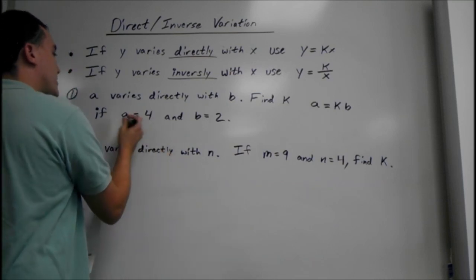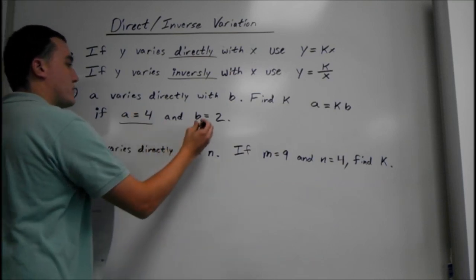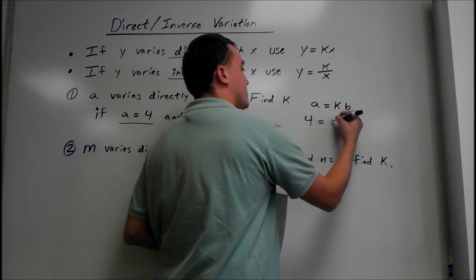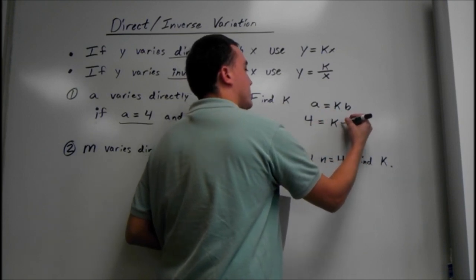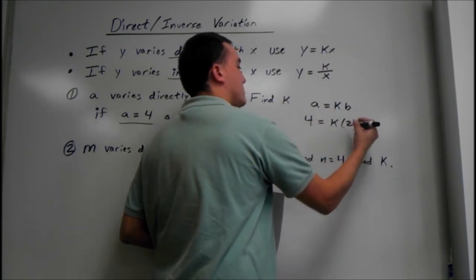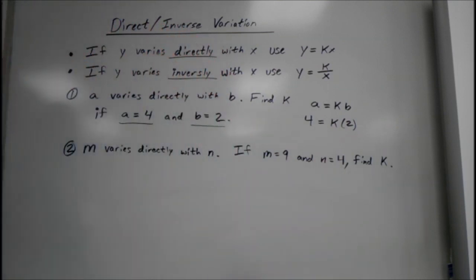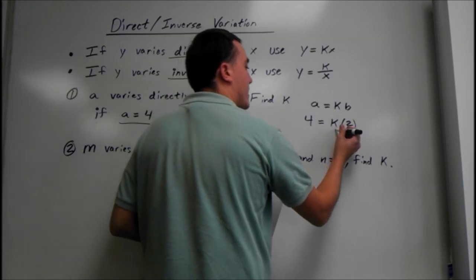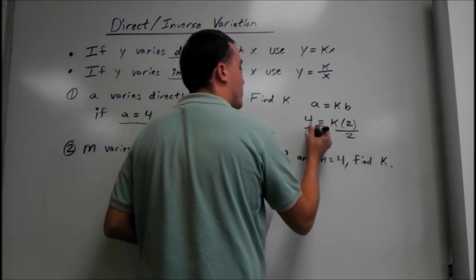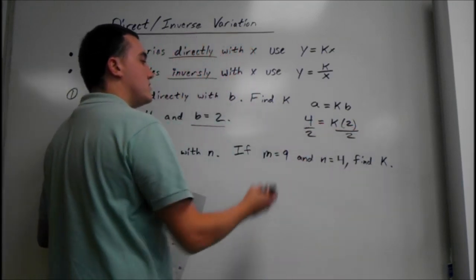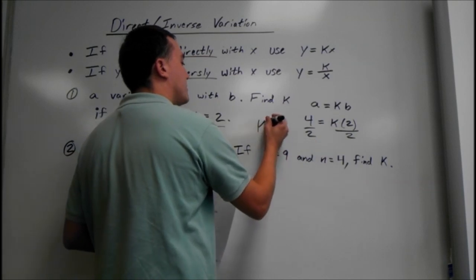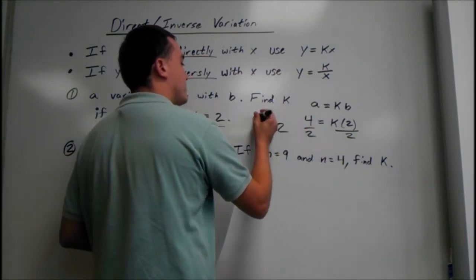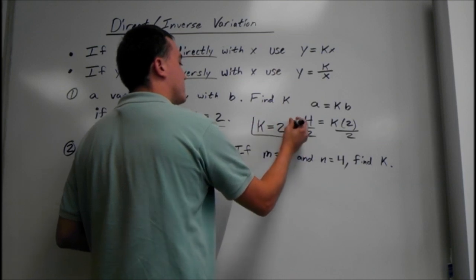We just plug in what they give us: a equals 4 and b equals 2, so 4 equals k times 2. Since k is multiplying with 2, we have to divide to get rid of it — divide by 2 on both sides. So we end up getting k equals 4 divided by 2, which is 2. That would be our answer.